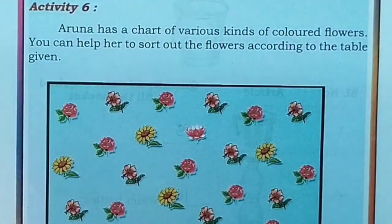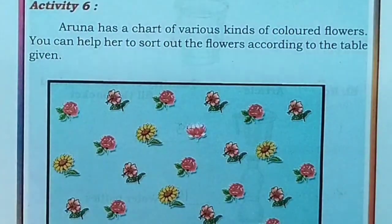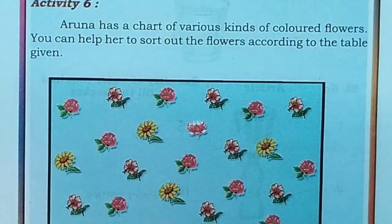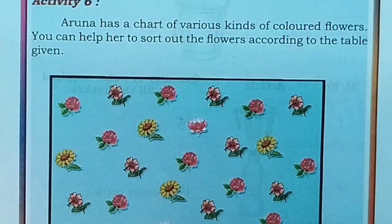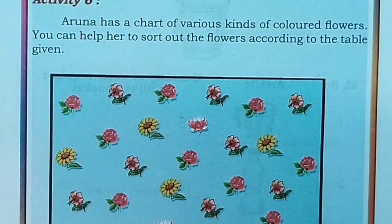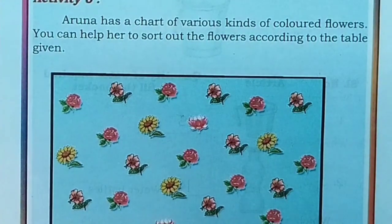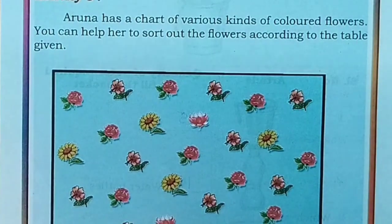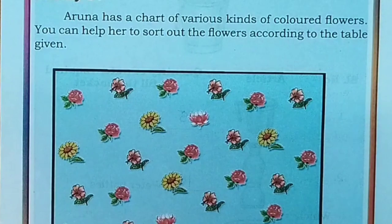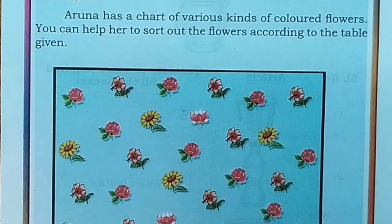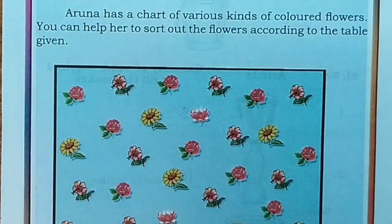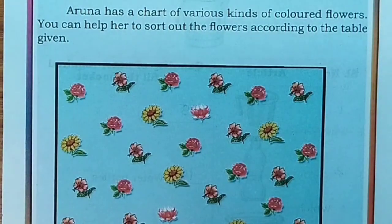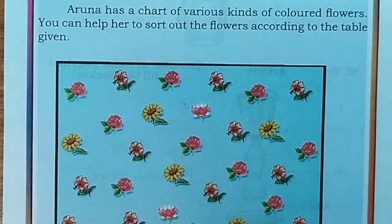Activity 6. Here we have different kinds of flowers. Aruna has a chart of various kinds of coloured flowers. You can help her to sort out the flowers according to the table given. Here Aruna is having different kinds of flowers, so we have to count the roses, hibiscus, sunflower and lotus — the number of each flower.